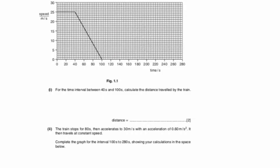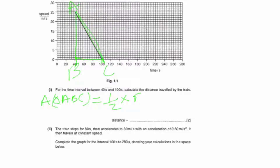For finding the distance, we can see one triangle is formed between 40 seconds and 100 seconds. The area under this triangle will give the distance. We name the triangle as ABC, so the area of triangle ABC will give the answer.